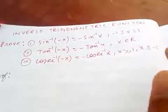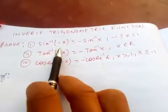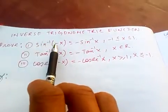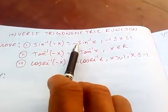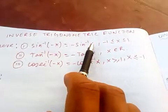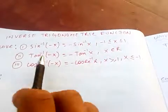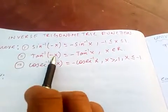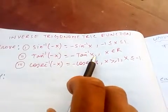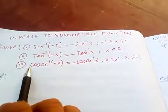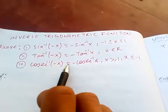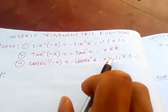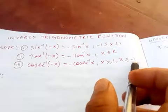Hi friends, today I'm going to prove inverse trigonometry identities. Number one: sine inverse of minus x is minus sine inverse of x, where x is between minus one and one. Number two: tan inverse of minus x is minus tan inverse of x, and x belongs to real numbers. And cosine inverse of minus x is minus cosine inverse of x, where x is greater than or equal to one or less than or equal to minus one.